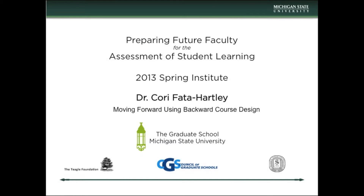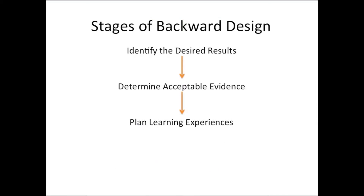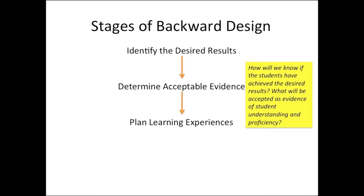These are the basic parts and stages of backward design. First, we want to identify the desired results — what should the students know, what should the students be able to do by the time they finish this unit, this lecture, this course? Then we need to determine what will we consider acceptable evidence — what will tell you whether or not the students have actually learned this material?